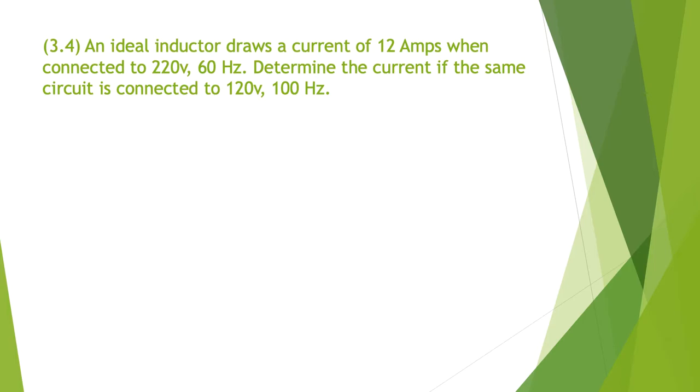Question 3.4: an ideal inductor draws a current of 12 amps when connected to 220 volts, 60 hertz. Determine the current if the same circuit is connected to 120 volts at 100 hertz.